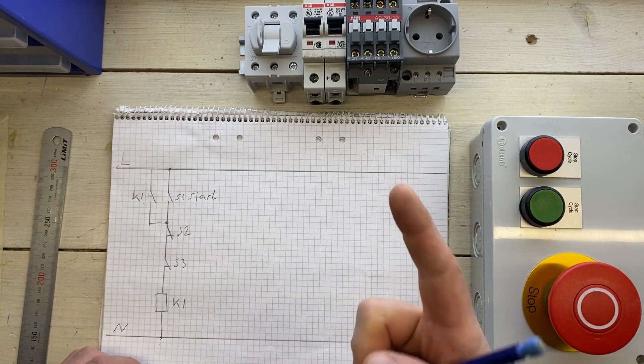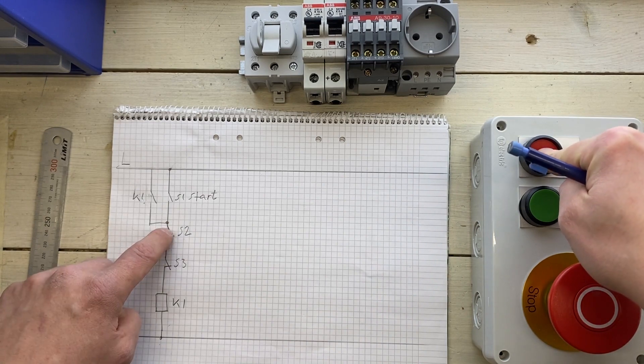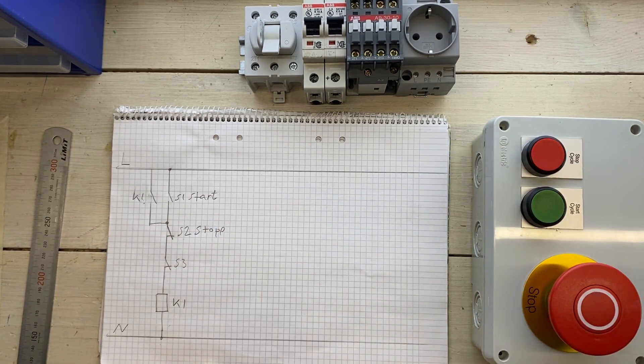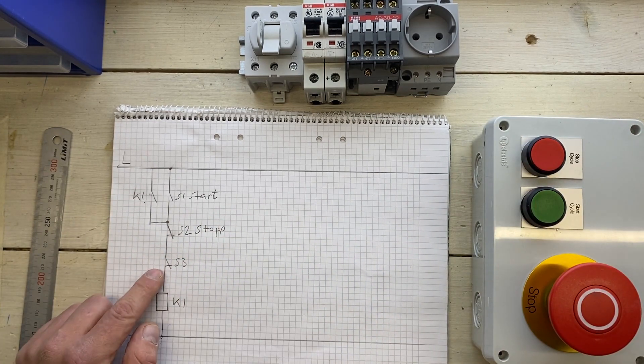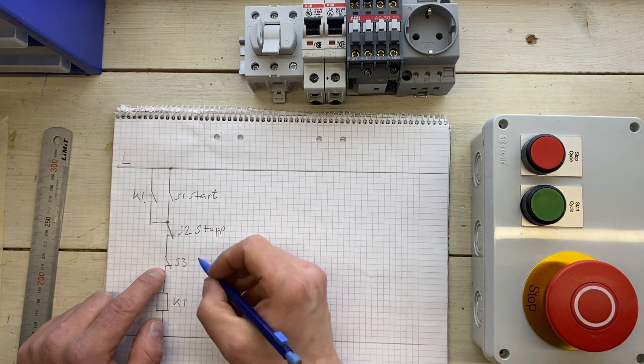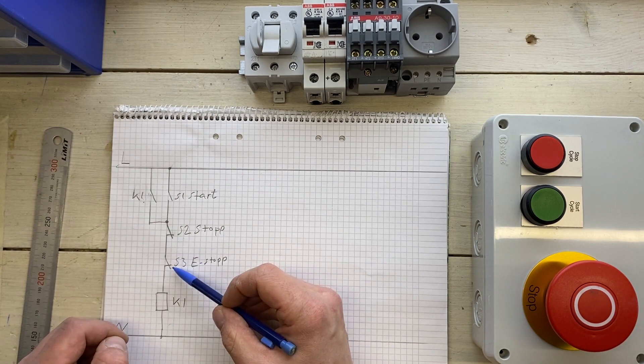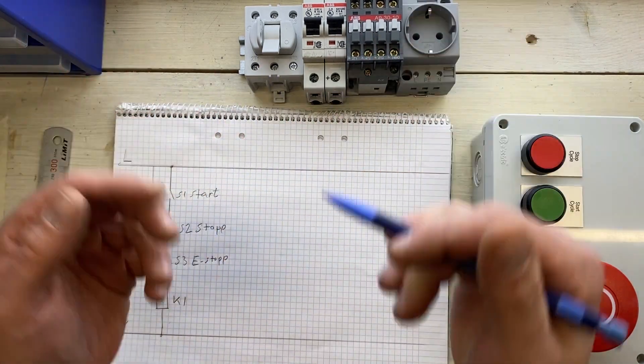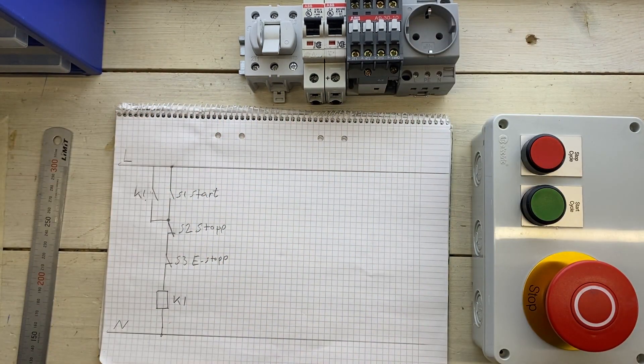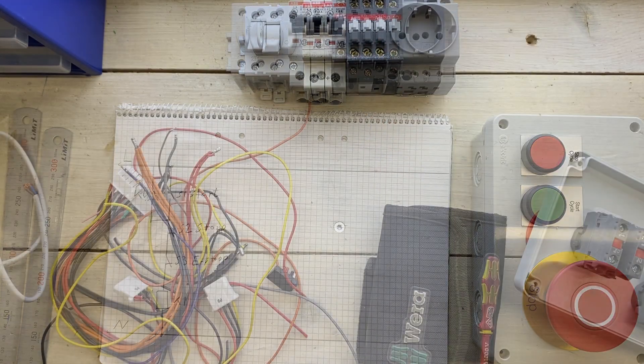So how do we get the relay coil to release? Well, we have two ways to do this. One, push the stop button, S2 opens, and K1 releases. Or push the emergency stop button. And in that case of course, S3 opens, K1 releases, and the contactor is reset. And this is what I'm going to hook up here to show you.